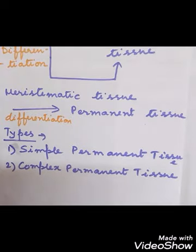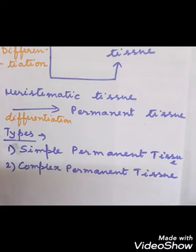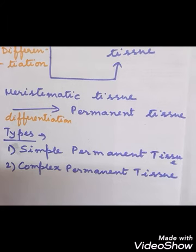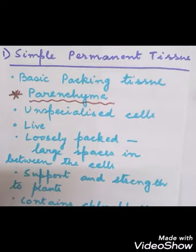There are two types of permanent tissue: simple permanent tissue and complex permanent tissue. When the meristematic tissue differentiates into permanent tissue, it forms these two types — simple permanent tissue and complex permanent tissue. Now we will discuss about the simple permanent tissue.